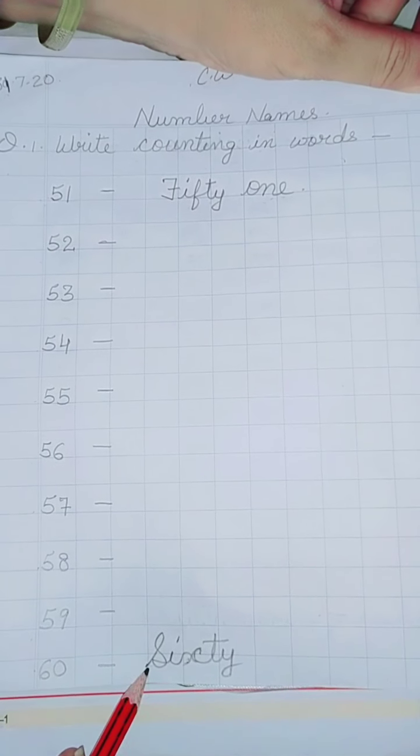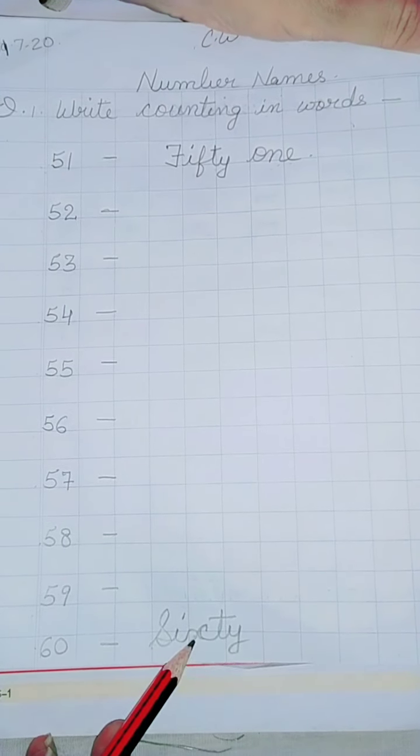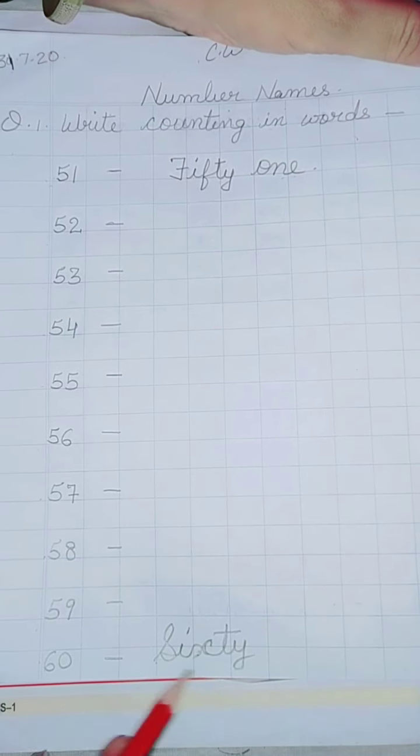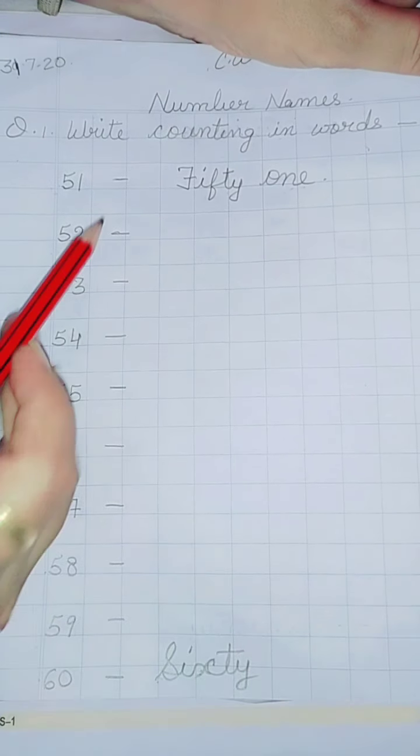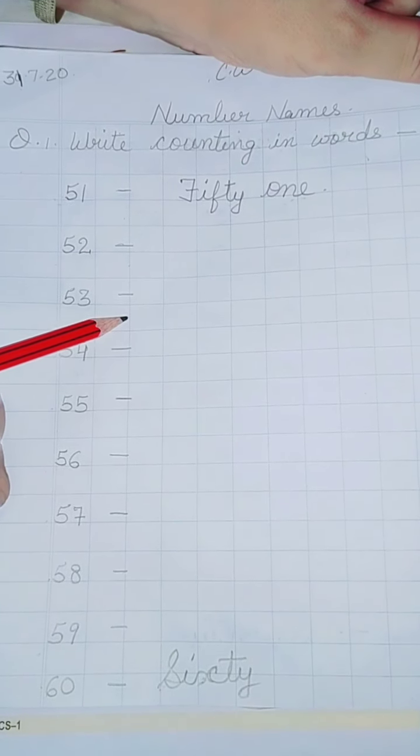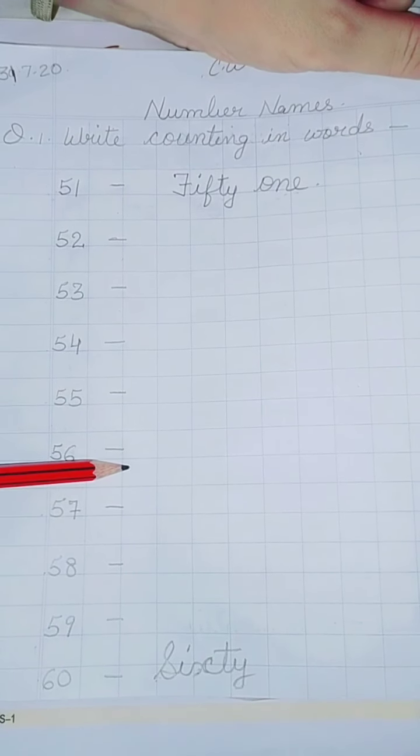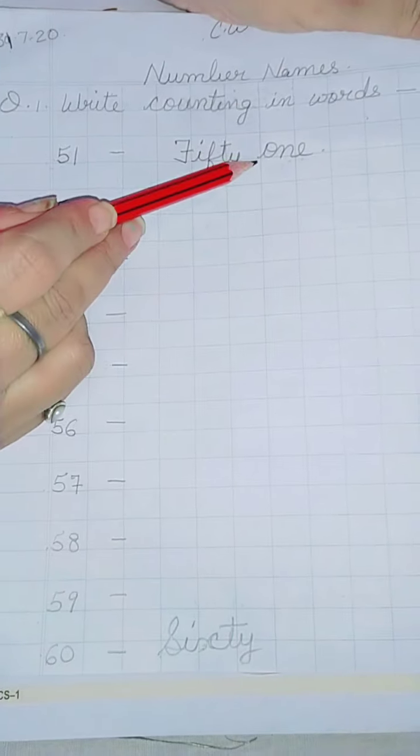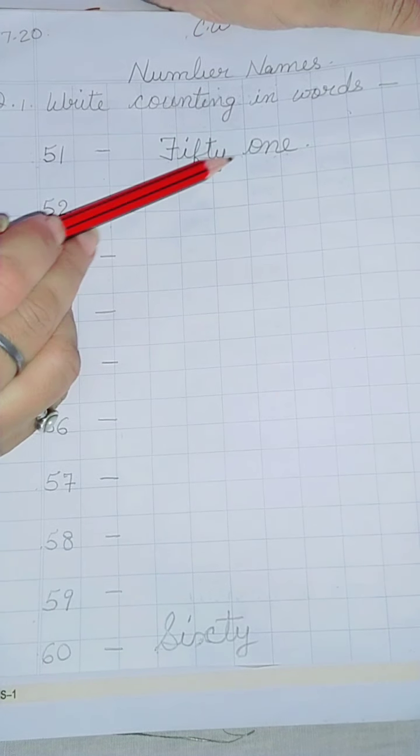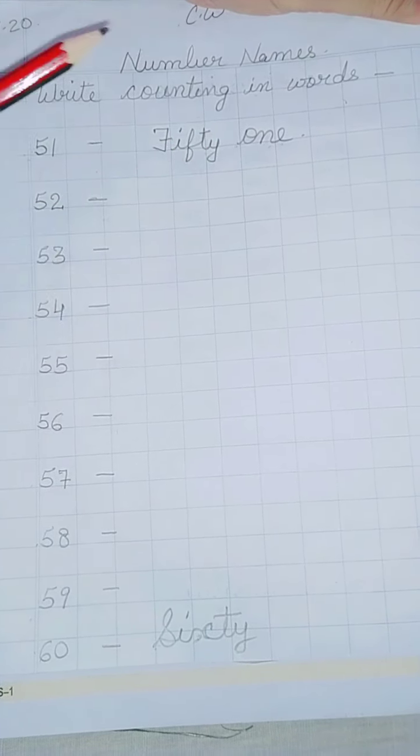And 60, the spelling of 60 is S-I-X-T-Y, 60. Leave one line after writing and write very neatly. Touch the line and write. In the same way I have written, you have to touch the line and write.